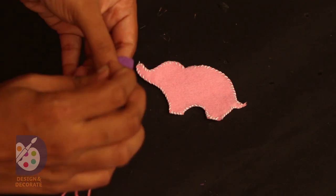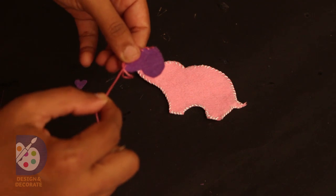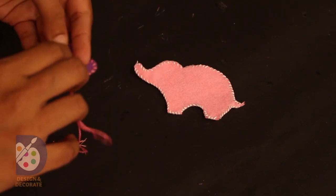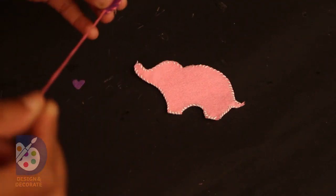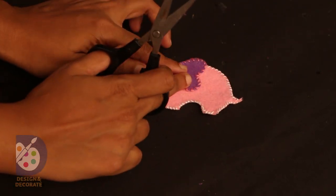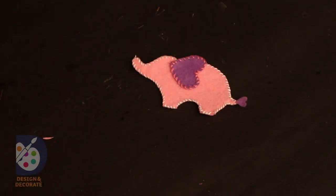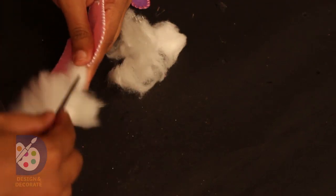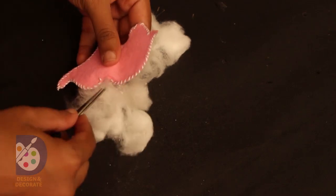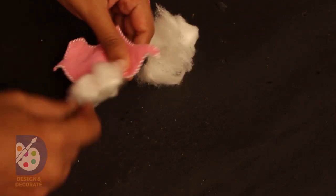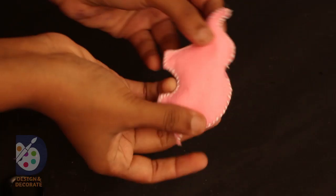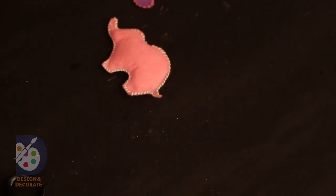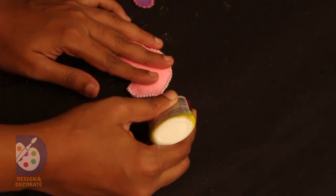After that, take the cotton pieces and insert them inside like this. Here I have used normal cotton that we usually have at our homes, but if you want you can also use the cotton that we use for making toys. That will be more spongy.